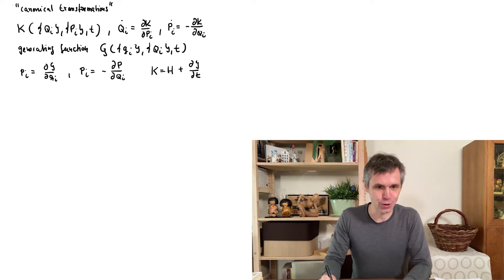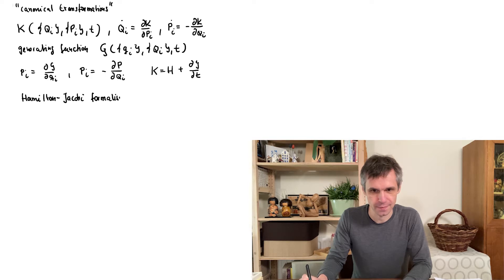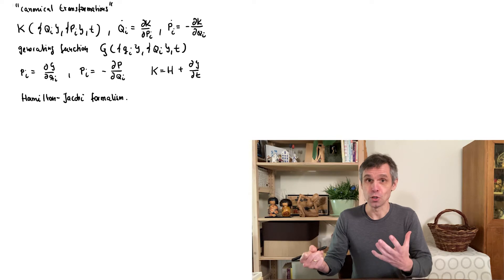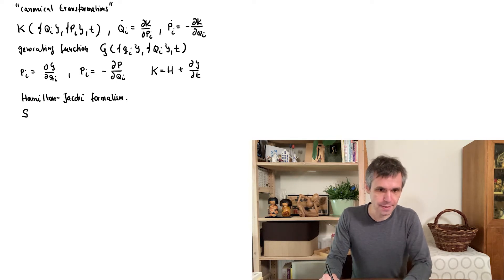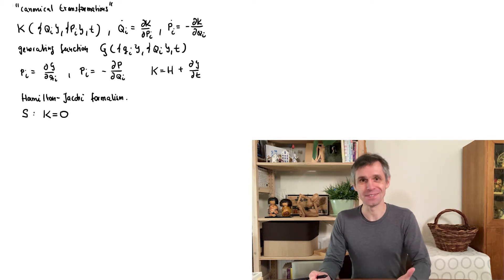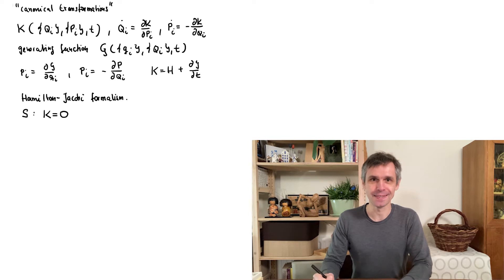And this is the so-called Hamilton-Jacobi formalism. It rests on the idea to select a very special generating function which we call S, so that it transforms the Hamiltonian to zero. This sounds like a very funny idea but let's see where it carries us.